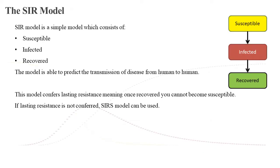In order to model the spread of COVID-19, we use the SIR model. The SIR model is a simple model which consists of three states: susceptible, infected, and recovered. This model is able to predict the transmission of disease from human to human. This model also confers lasting resistance, meaning once recovered, you cannot become susceptible again. If lasting resistance is not conferred, the SIRS model can be used.